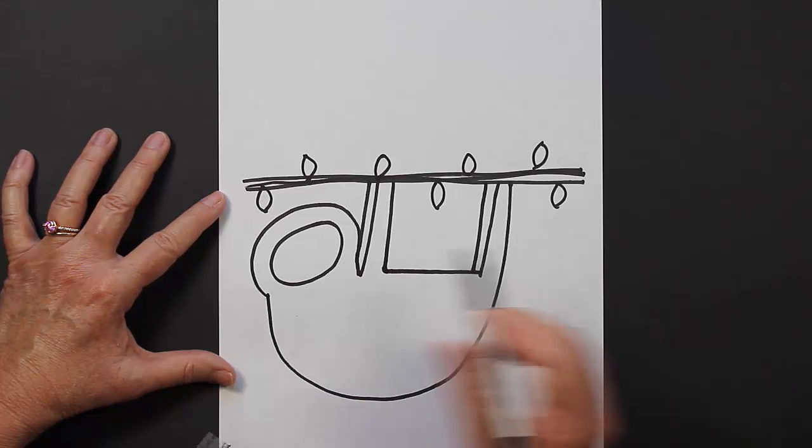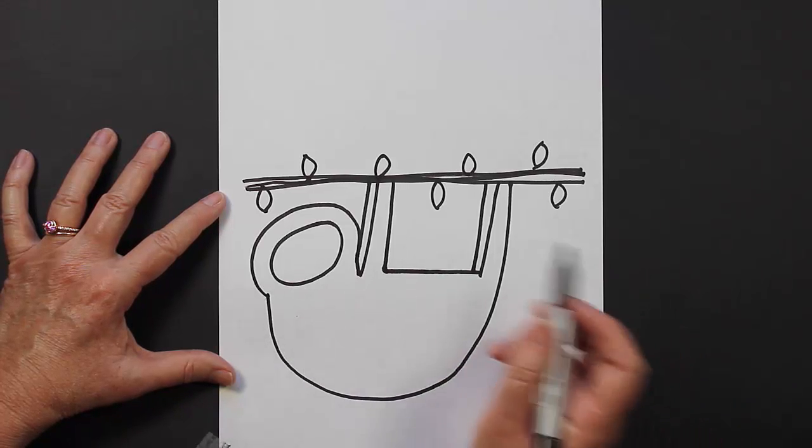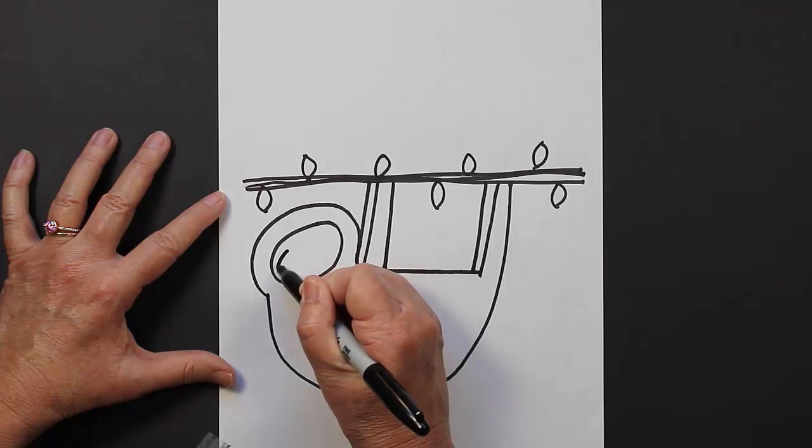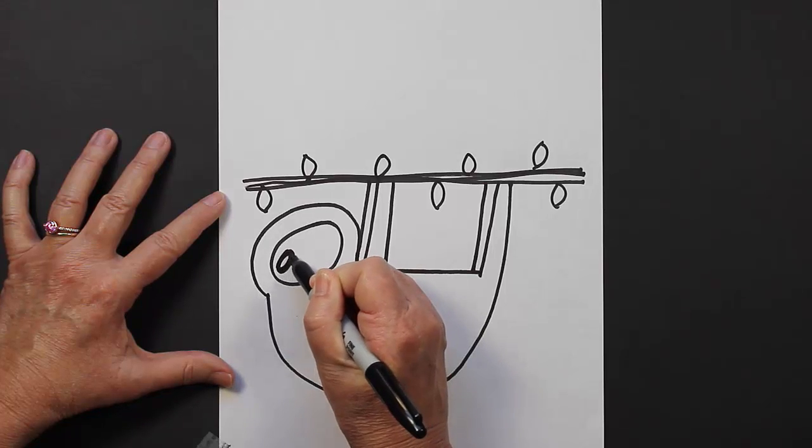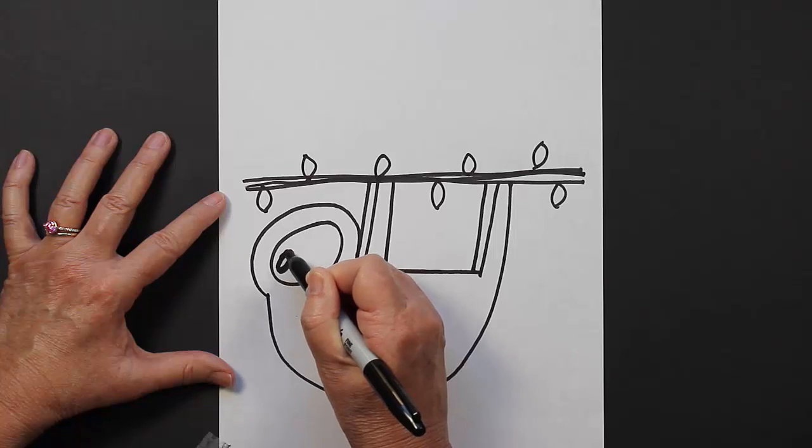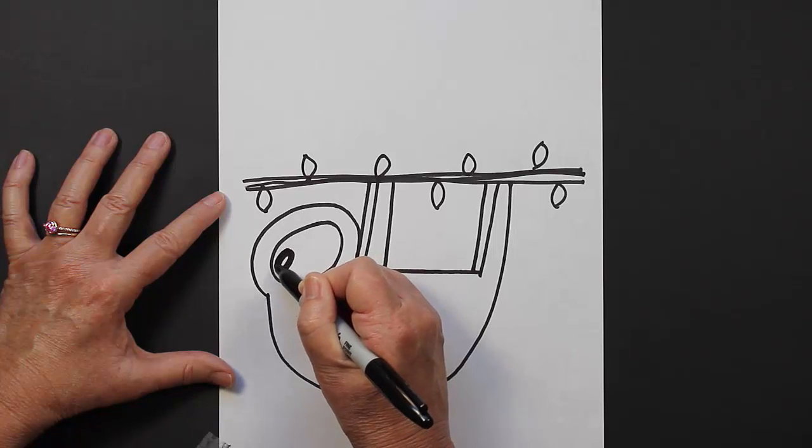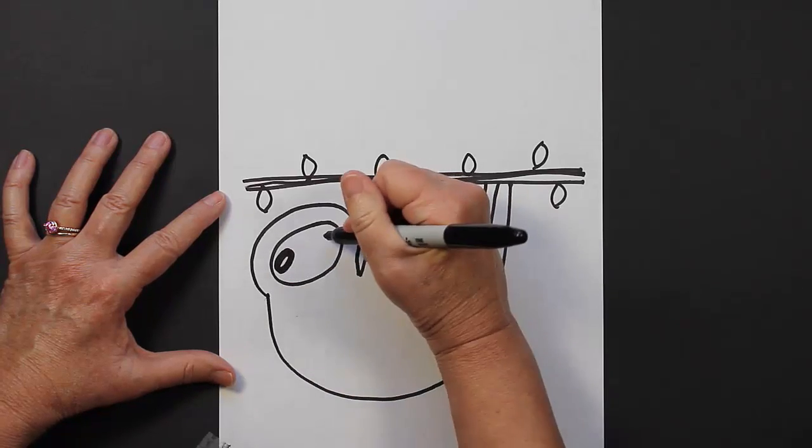Okay, what else do we need? We need a little face. Now if you look at pictures of sloths, they have very, I don't know, they're almost sad. They almost look sad. I'm sure they're not sad, but they kind of look sad.